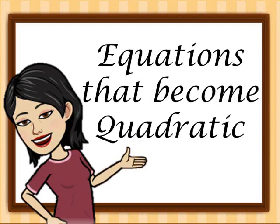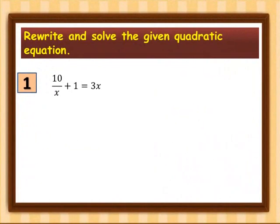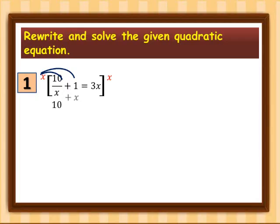Let's have the first example: 10 over x plus 1 is equal to 3x. The first step is we are going to multiply everything by x. Distributing, x times 10 over x gives us 10, and x times 1 is plus x, and 3x times x is equivalent to 3x squared.